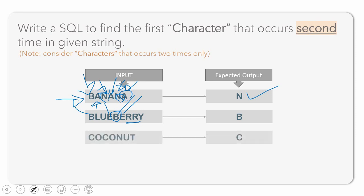Let us understand with one more example. First occurrence of C, second occurrence of C, first occurrence of O, second occurrence of O. C is the character whose second occurrence appears even before O's. So we just need to print C.